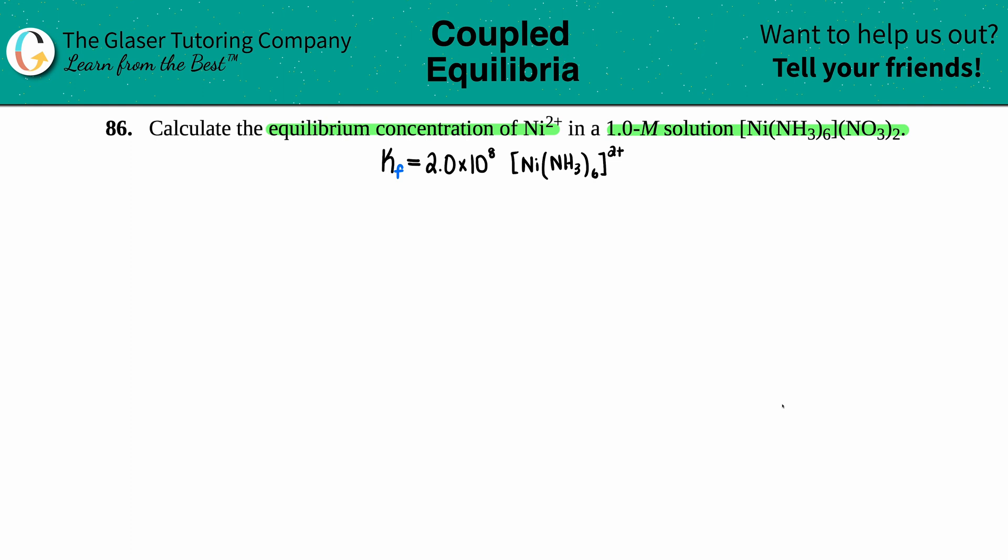Now when I did look in the back of the textbook to find out a Kf value, I did find one for Ni(NH3)6 with a 2+ charge. Remember, anytime that you have a Kf value, this is a complex ion.